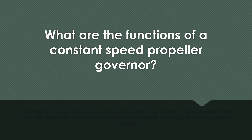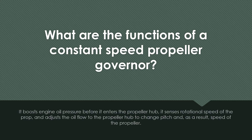What are the functions of a constant speed propeller governor? It boosts engine oil pressure before it enters the propeller hub. It senses rotational speed of the prop and adjusts the oil flow to the propeller hub to change the pitch, and as a result the speed of the propeller.